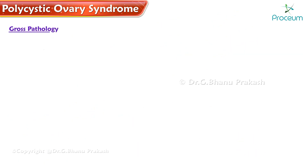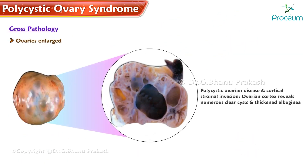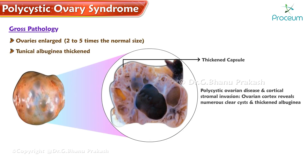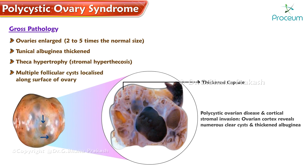In gross pathology, ovaries are enlarged two to five times the normal size. Tunica albuginea is thickened. There is theca hypertrophy, stromal hyperthecosis, and multiple follicular cysts localized along the surface of the ovary.